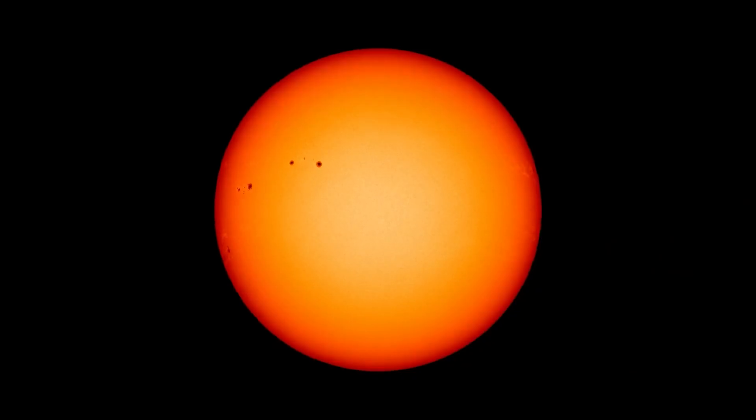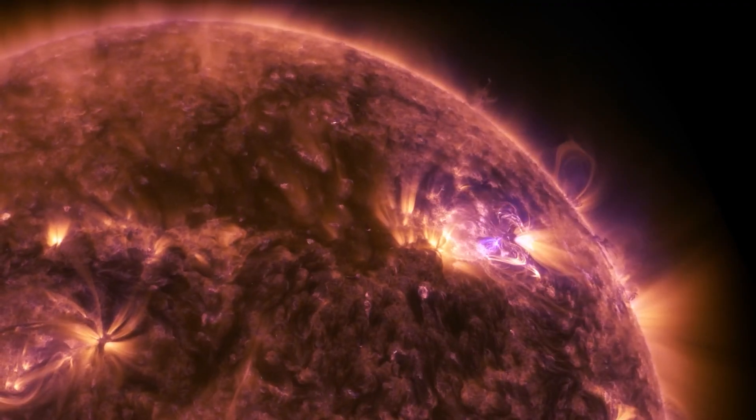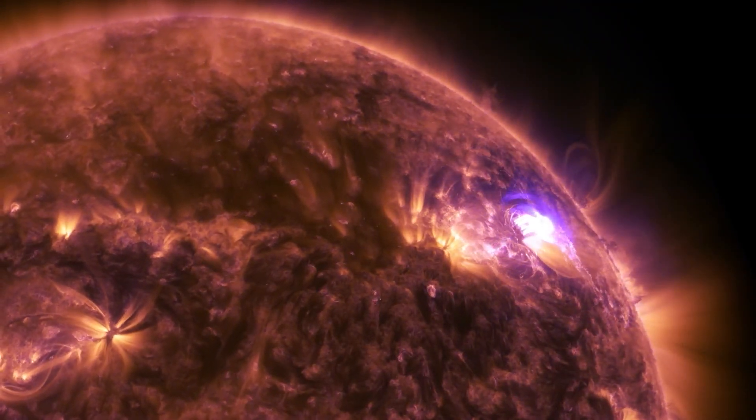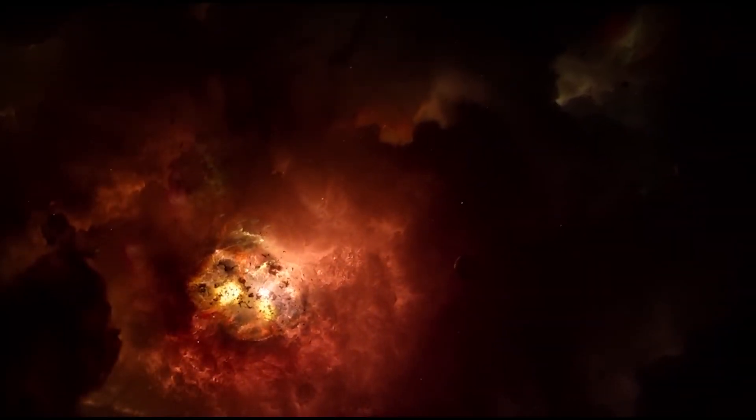In addition, the circumstellar envelope, composed of the material ejected by the star, plays an important role in emitting and absorbing light, which also influences how we perceive its brightness.